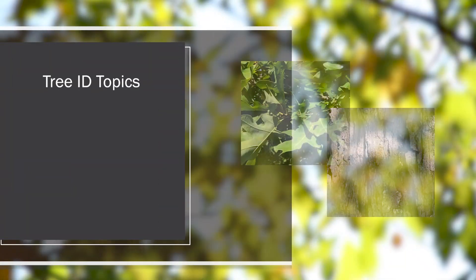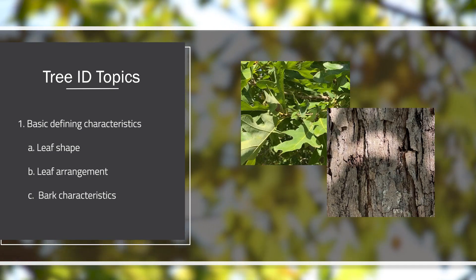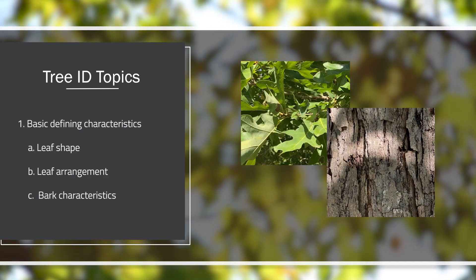Different tree species have different requirements and different growth habitat requirements. It's important for us to know exactly what trees we have in our backyard so we can make sure to provide everything that tree needs to thrive in its environment. So we're going to be talking about some basic defining characteristics such as leaf shape, leaf arrangement, bark characteristics, and things like that. We'll look at a few common backyard Georgia trees and talk about how we can identify them.